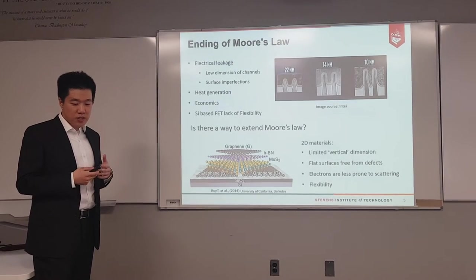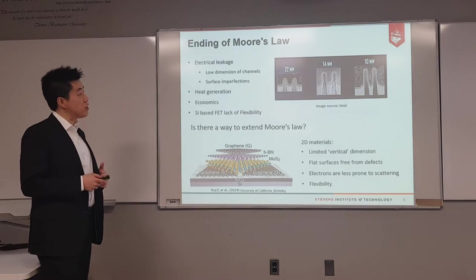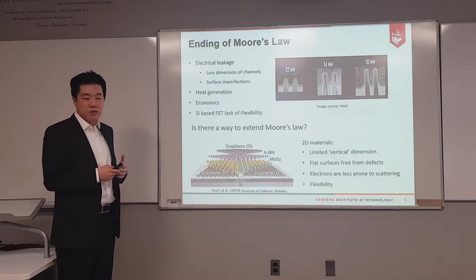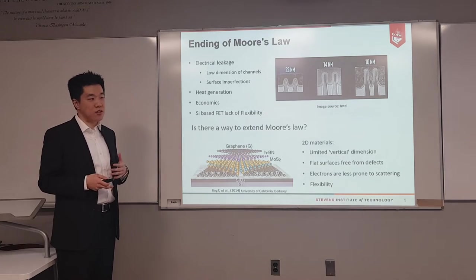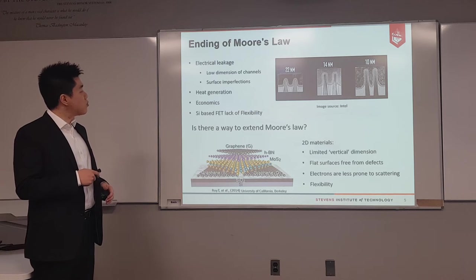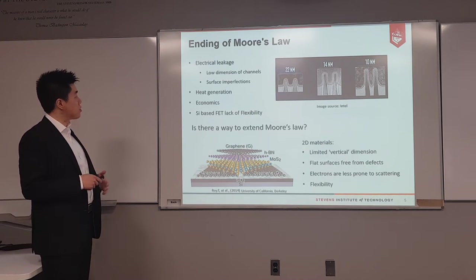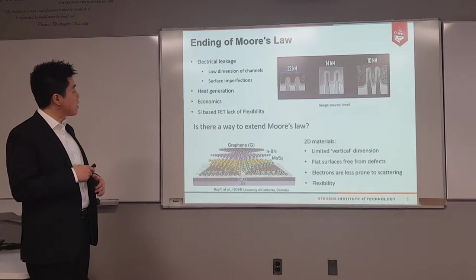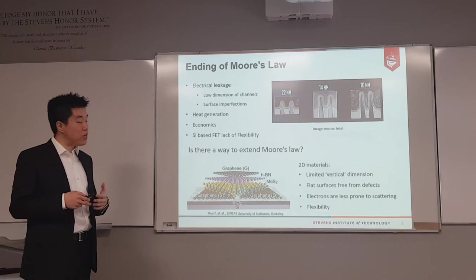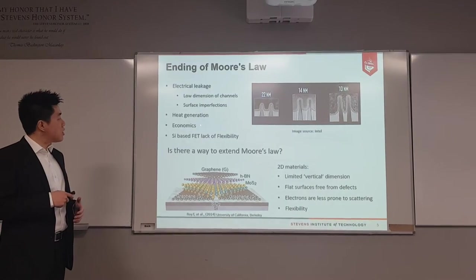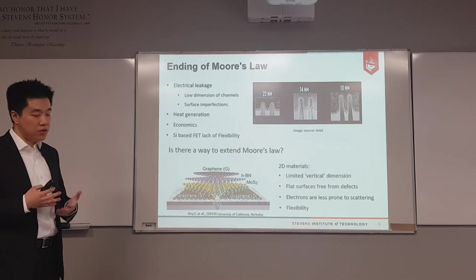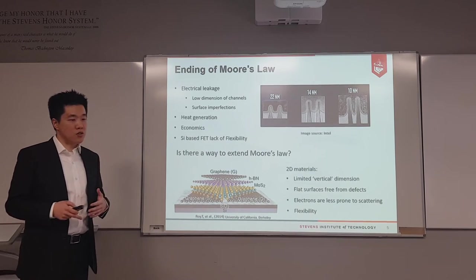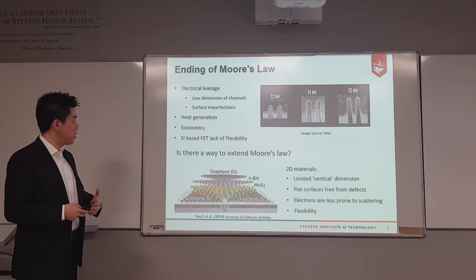As technology has developed so fast, Intel has already released 10 nanometer technology and AMD claimed to release 7 nanometer technology. Even though these nodes don't literally represent the transistor size, the transistors are already really, really small. The small size of transistors leads to problems with 3D materials — the low channel dimensions and surface imperfections lead to heavy electrical leakage, which generates a lot of heat across billions of transistors, requiring significant investment in cooling systems.